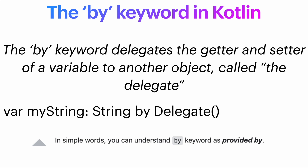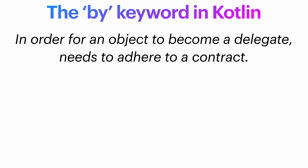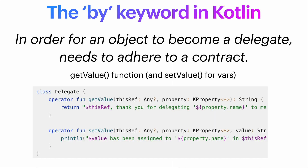Now in order for this delegate to be able to override those getters and setters, it needs to adhere to a specific contract — not in the form of an interface, but they need to provide a getValue function and a setValue for vars.